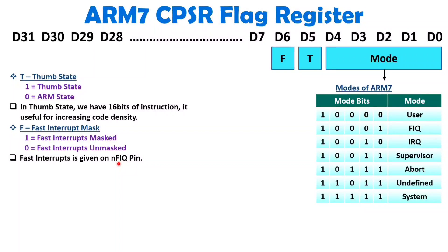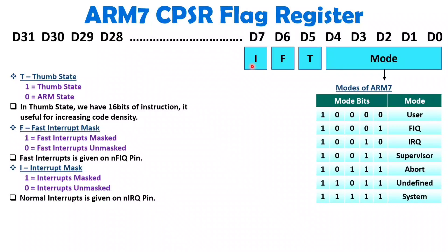On the NFIQ pin you receive fast interrupts, and we can mask them using the F bit. D7 is the I bit, which indicates the status of normal interrupts. By setting the I bit to 1, we can mask normal interrupts. Normal interrupts are received on the NIRQ pin. If I equals 0, we can receive normal interrupts on the NIRQ pin normally.